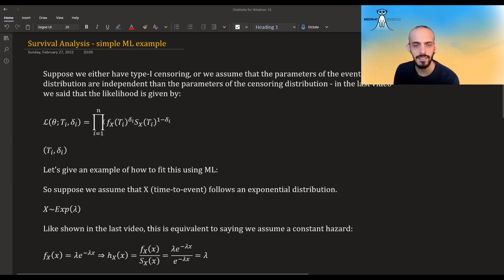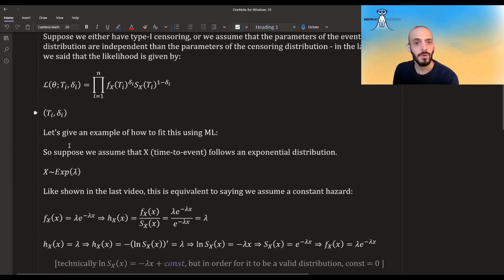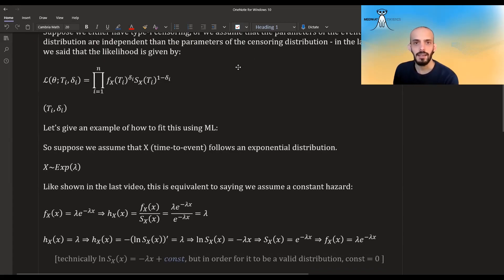In the last video I used the x's, but the x's are only for the events. So remember the t's now are the times and the deltas are telling us whether the time is an actual event time, meaning we observed the actual event taking place at that time, or it's a censoring time meaning we only observed that the event didn't take place until that time. So the correct formula has to have t here instead of x's. So how do we fit this using maximum likelihood?